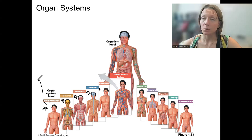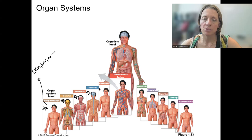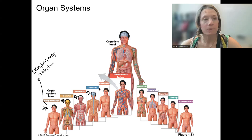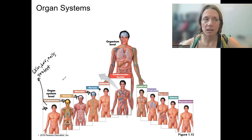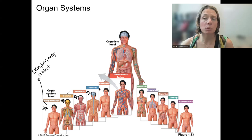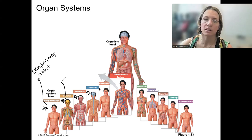Let's start with integumentary. This largely refers to the skin. It also includes hair and nails and some other accessory structures, but its main job is to protect — physically as well as in terms of temperature regulation. There are several ways it protects. We will see other functions besides these main ones, but these are going to be the primary ones.